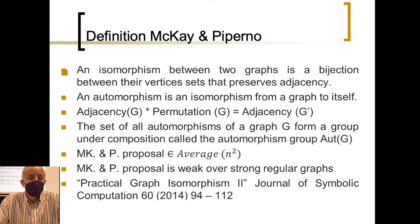I have taken one of the several and very basic definitions from the paper from McKay and Adolfo Piperno, from this country in which I am. An isomorphism between two graphs is a bijection between their vertices sets that preserves adjacency. An automorphism is an isomorphism from a graph to itself.